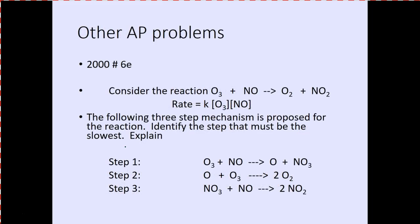Consider the reaction: O3 + NO → O2 + NO2, with a given experimentally determined rate law. The following three-step mechanism is proposed. Identify the step that must be the slowest and explain. Step one is the slowest because its proposed rate would be the same as the experimentally determined rate.